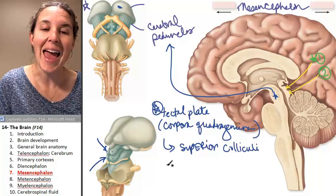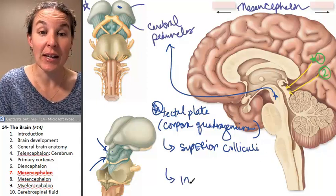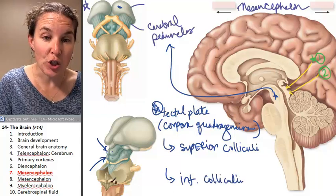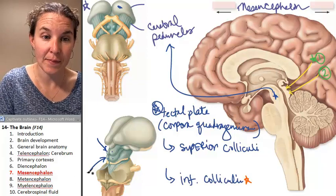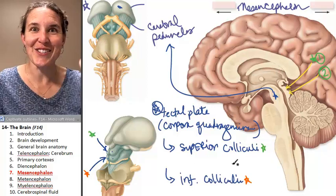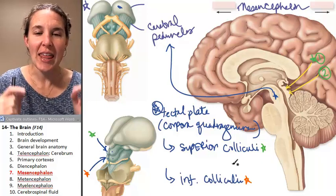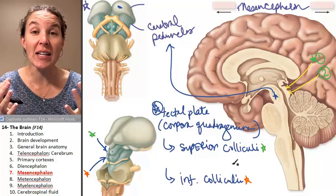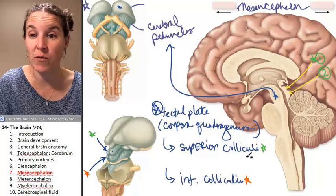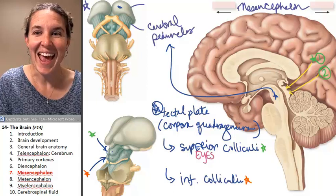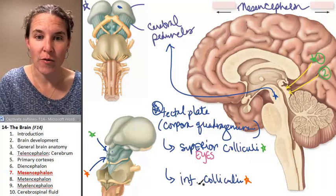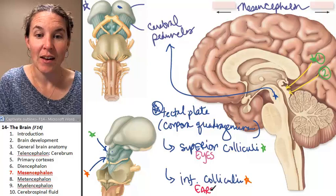The tectal plate contains both superior colliculi and inferior colliculi — two inferior colliculi and two superior colliculi. These structures are reflex integrators. The superior colliculus receives information from the eyes, and the inferior colliculus receives information from the ears.